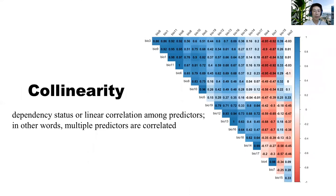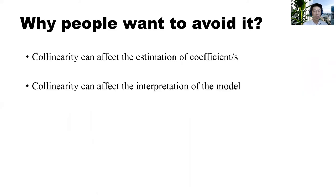So first, what is collinearity? It refers to the dependency status or linear correlation among predictors. In other words, it's when multiple predictors are correlated. Why do people want to avoid it? Because collinearity can affect the estimation of the coefficients, and because of the uncertainties in the estimation of the coefficients, that would affect the interpretation of the model.